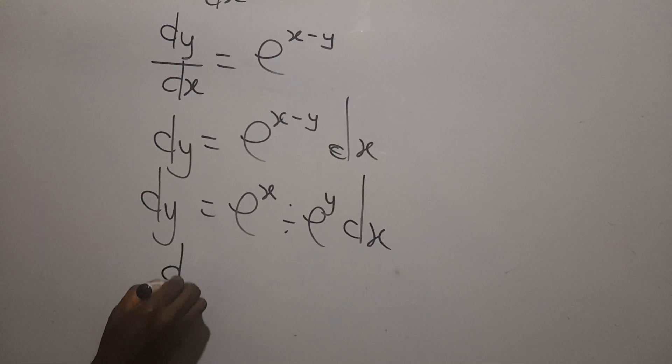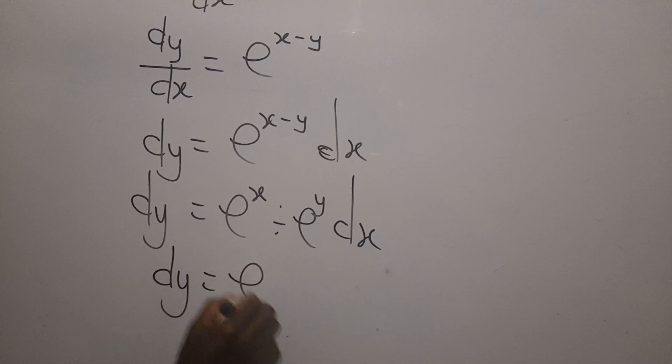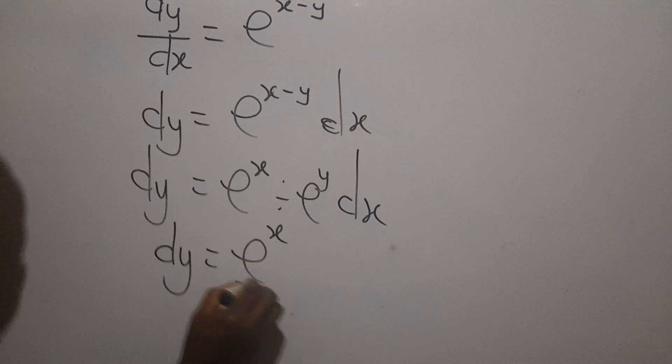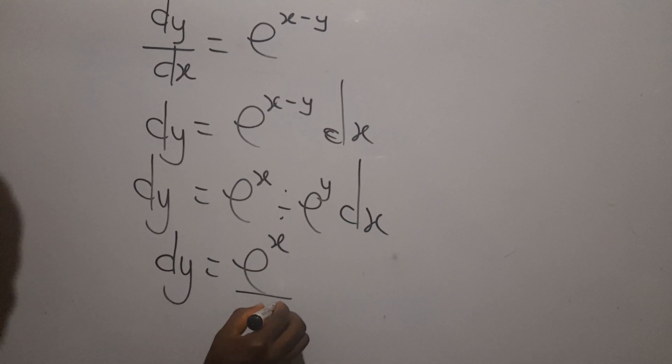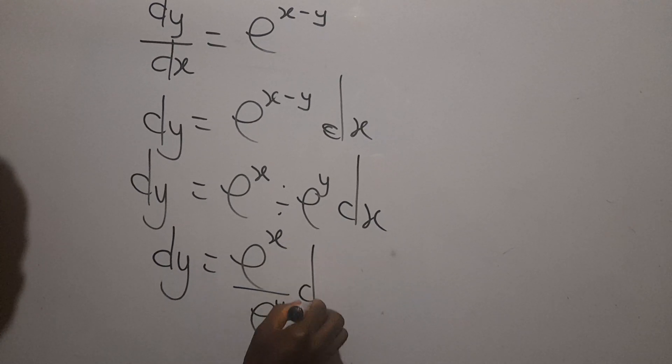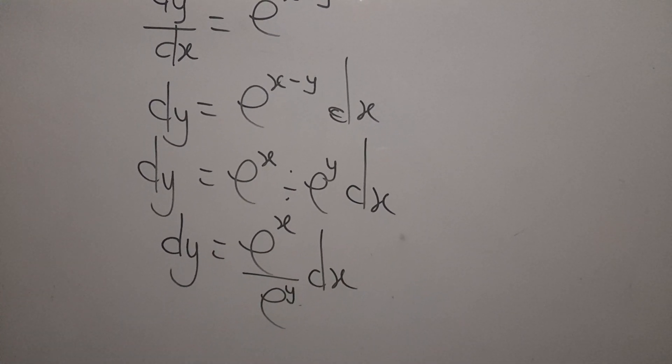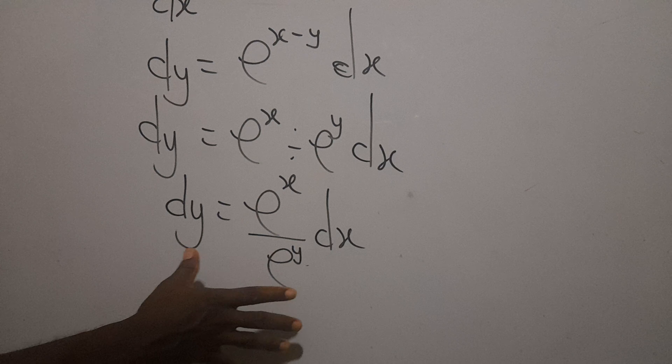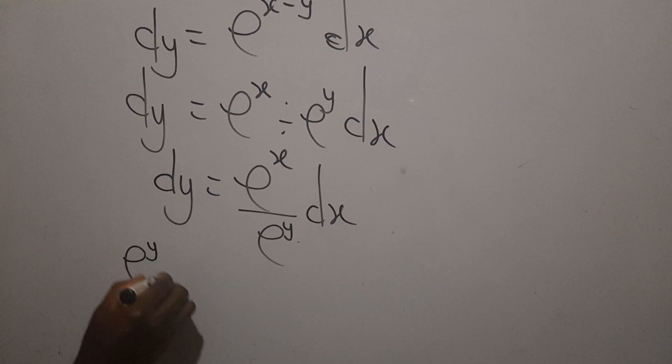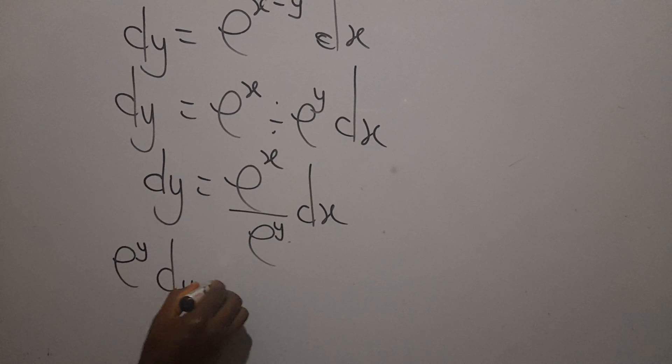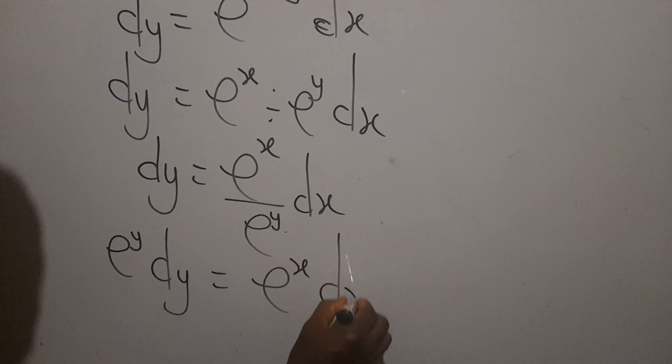So we can say that dy equals e exponent x over e exponent y dx. Now multiply both sides by e exponent y and now have e exponent y dy equal to e exponent x dx.